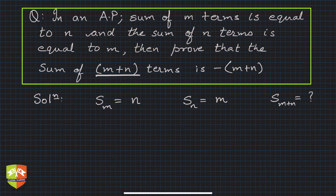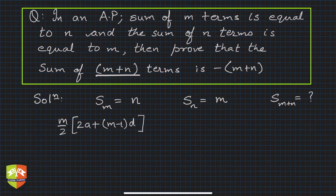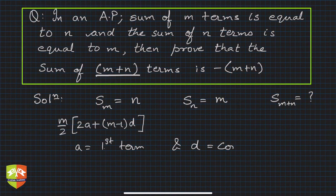So play with subscripts only. Let's start. S_m, what is S_m? Sum of first m terms of an AP is given by m by 2, twice a plus m minus 1 times d. a and d are not known, so a is first term and d is common difference.